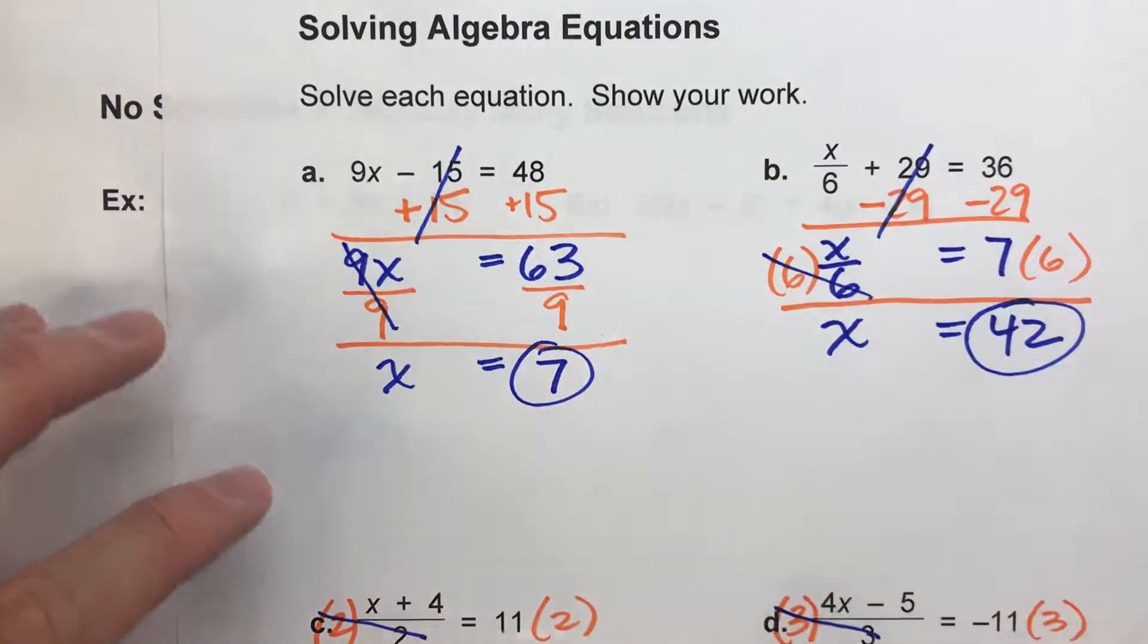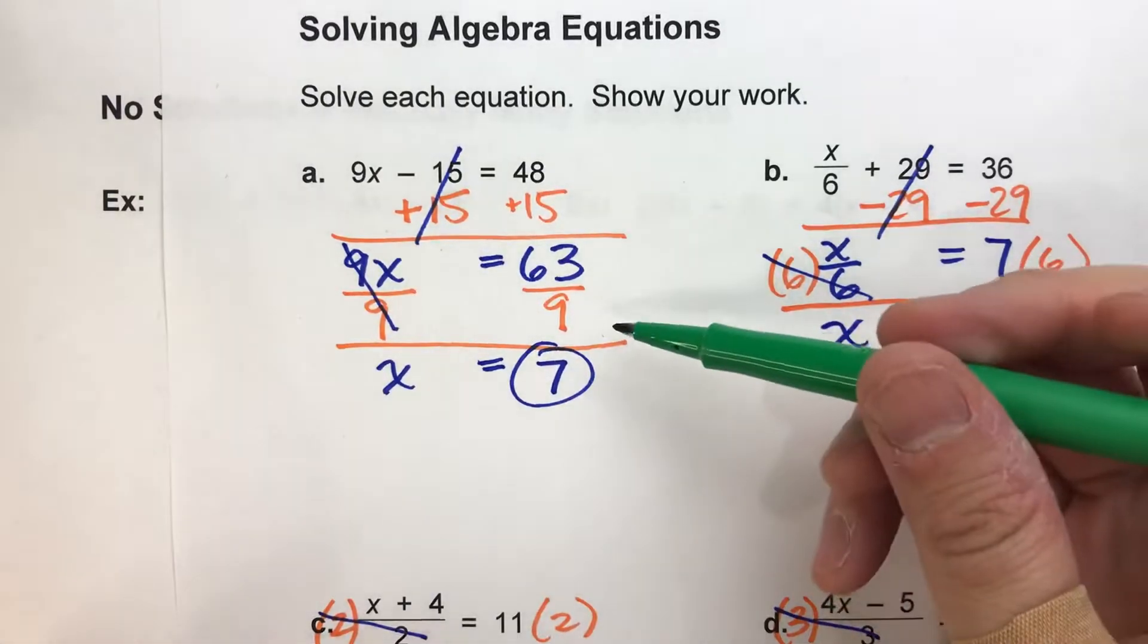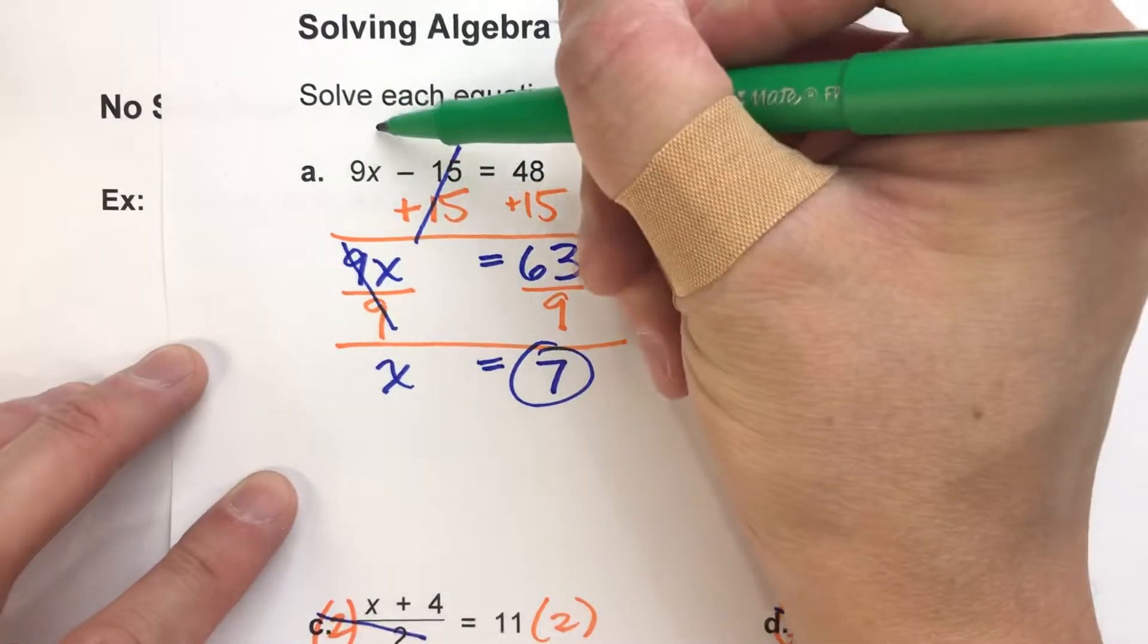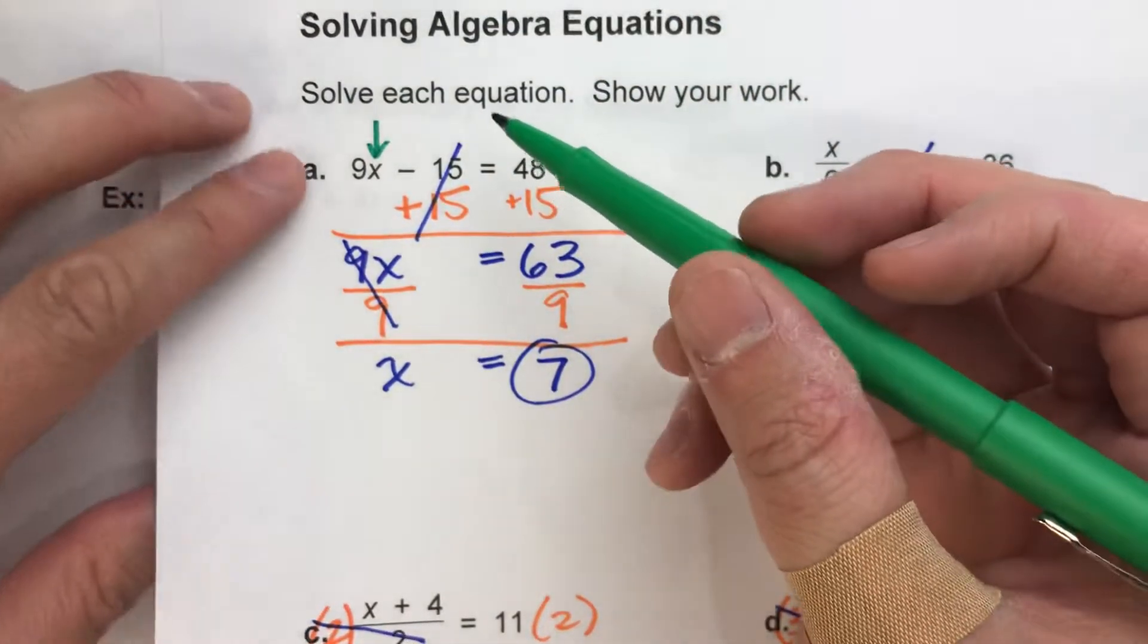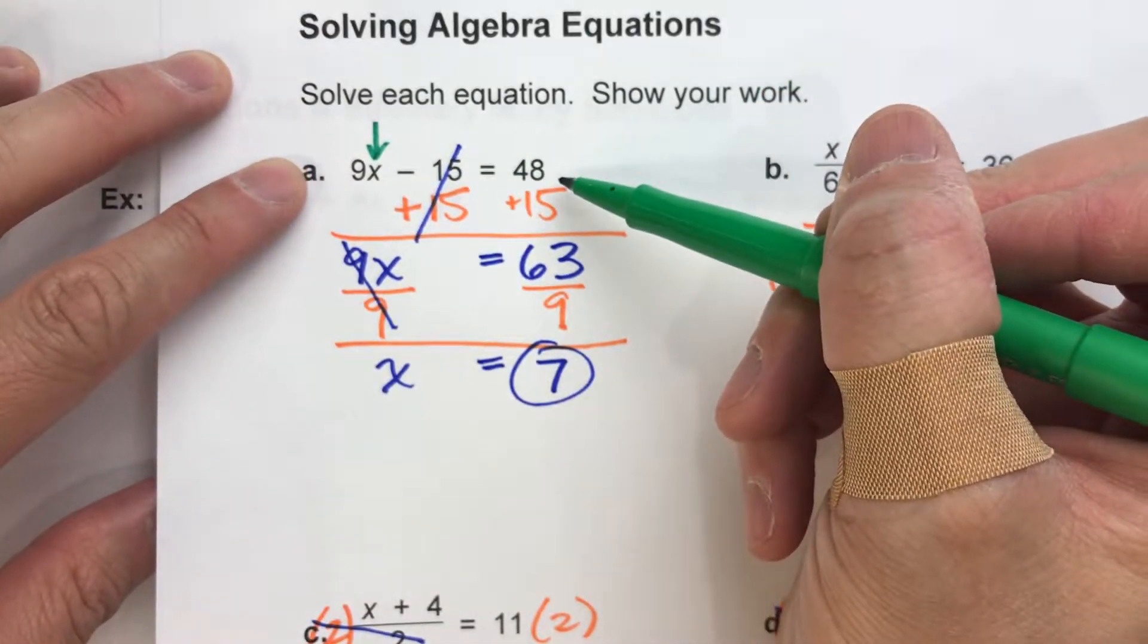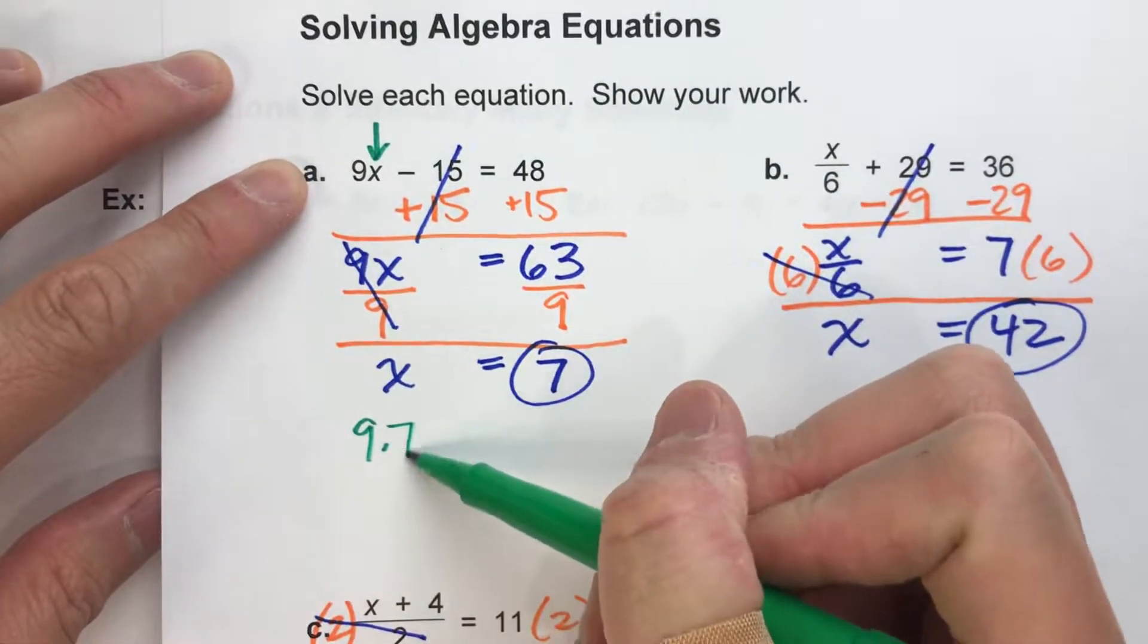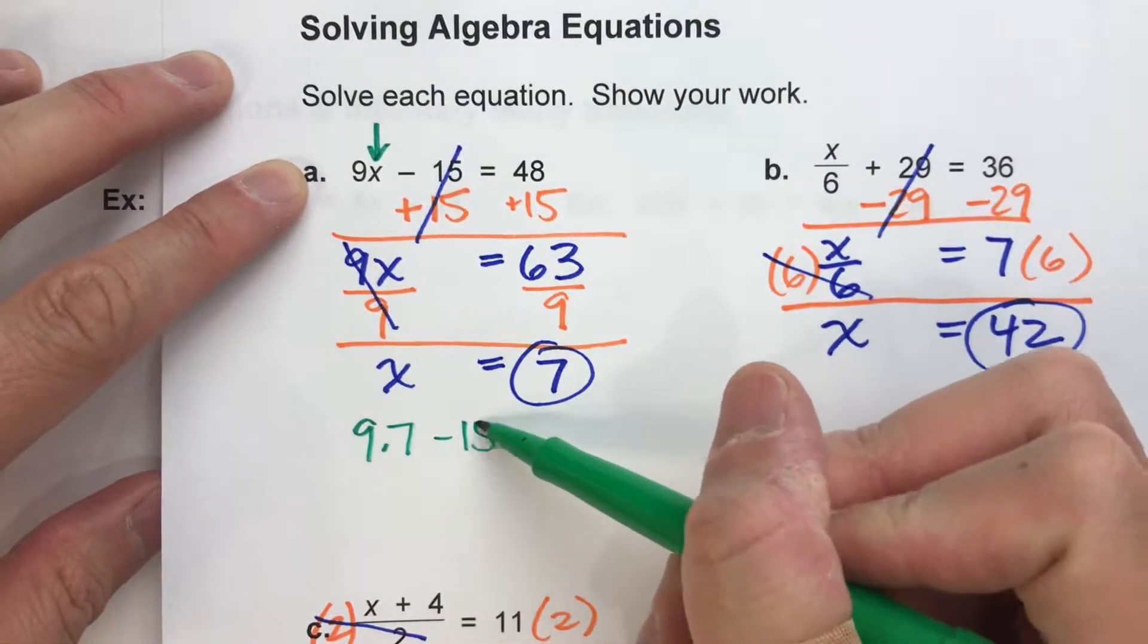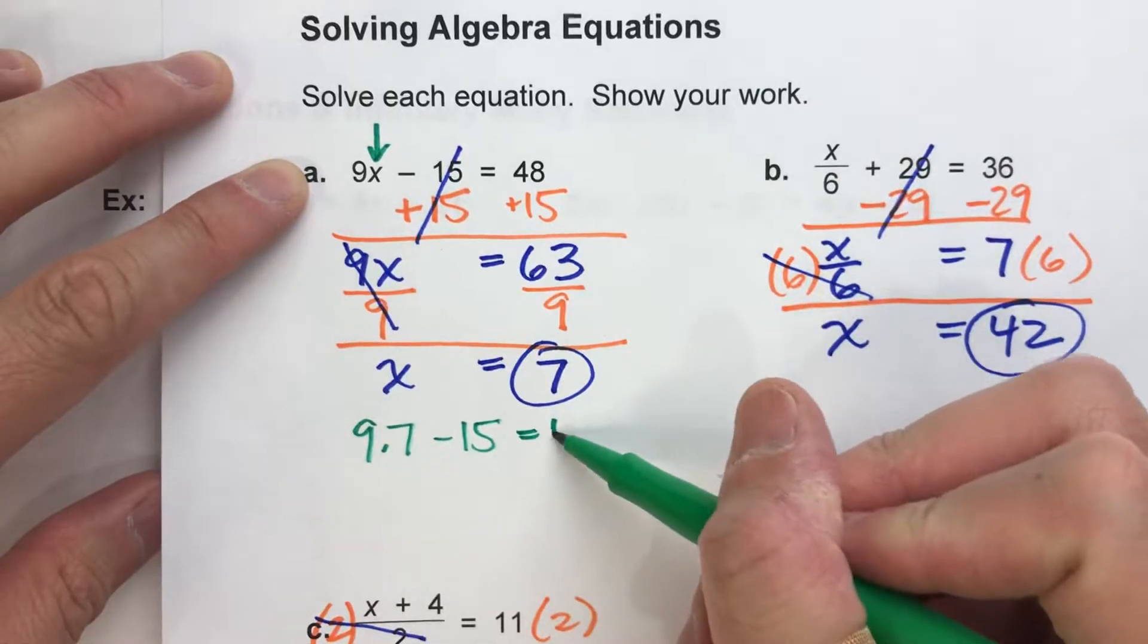But what does that solution 7 actually mean? It means that if I take 7 and put it in for x here, that this side of the equation will actually equal the other side.